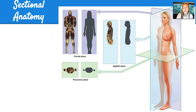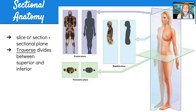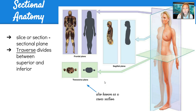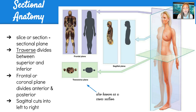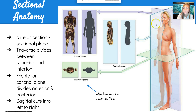Sectional anatomy refers to the different planes or different cuts — slices or sections are called sectional planes. The transverse plane divides between the superior and inferior parts of the body, also known as a cross section. The frontal or coronal plane divides anterior and posterior. And then finally, the sagittal plane cuts left to right — you can follow the arrows in the figure to see how each cut would look.